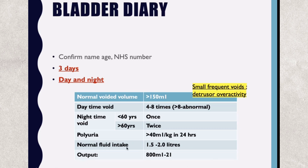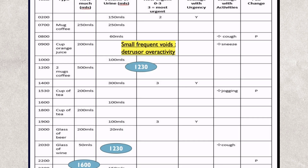Polyuria is defined as more than 40 ml per kg in 24 hours. Normal fluid intake is 1.5 to 2 liters, and normal output is 800 ml to 2 liters. This is the average intake we instruct patients about.